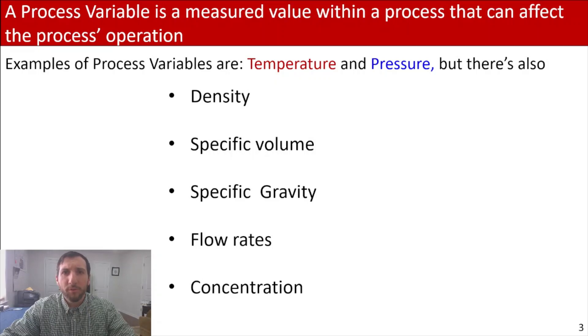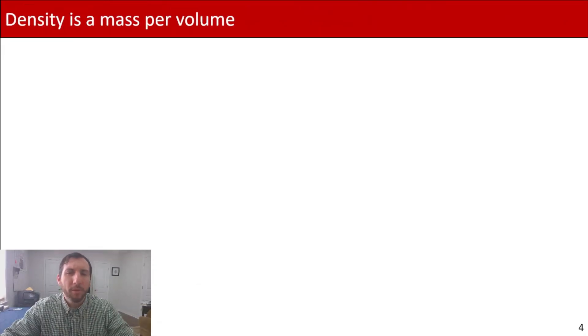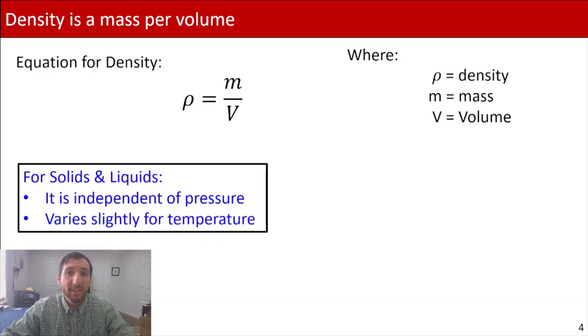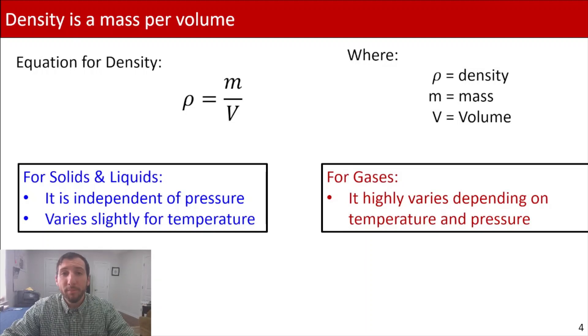So we'll start it off with density. And you're probably already familiar with density. Density is mass per volume. And the way we're going to represent it with an equation is we've got density, which we're using the variable rho equals our mass per volume. Now, when we deal with density, there's a couple of assumptions we're making depending on the state of our material. So for example, for solids and liquids, we're going to be assuming that it's independent of pressure and it varies slightly for temperature. Whereas for gases, it's going to be highly dependent on temperature and pressure.